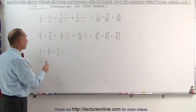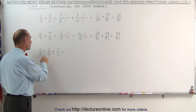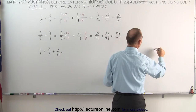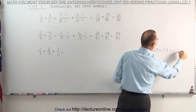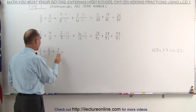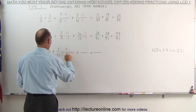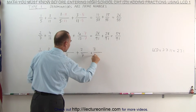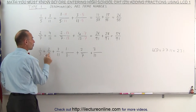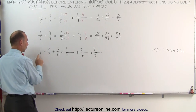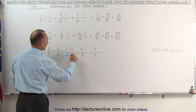On the third exercise, we now have three fractions, but the methodology is very similar. The lowest common denominator is simply the product of all three denominators. Here we can see that the lowest common denominator is equal to 3 times 7 times 11, which is equal to 21 times 11, which is 231. What we need to do is take each of the three fractions and multiply both the numerator and the denominator by the product of the two other denominators. So on the first fraction, that would be 7 times 11, or 77.